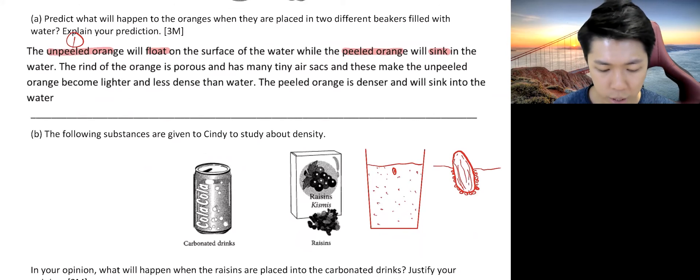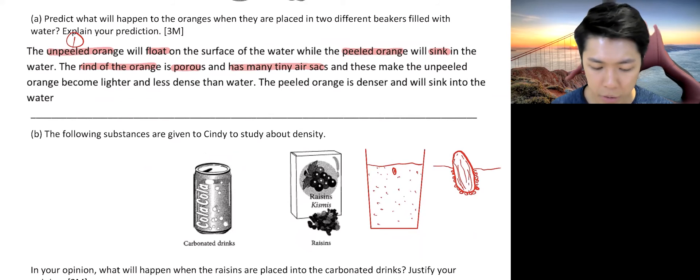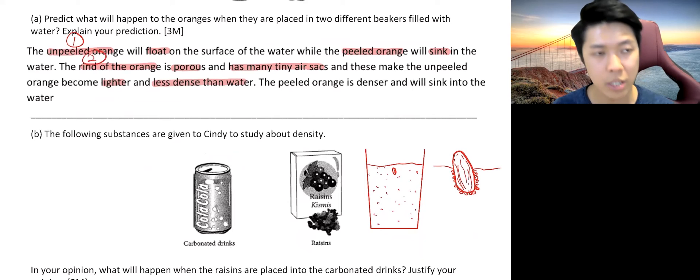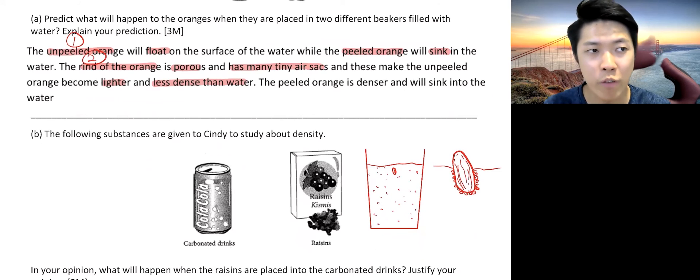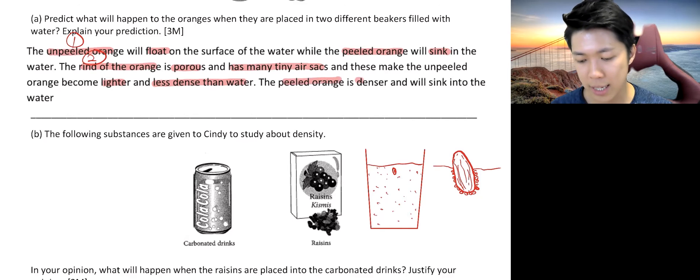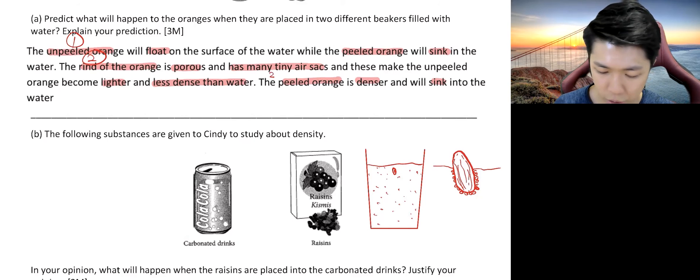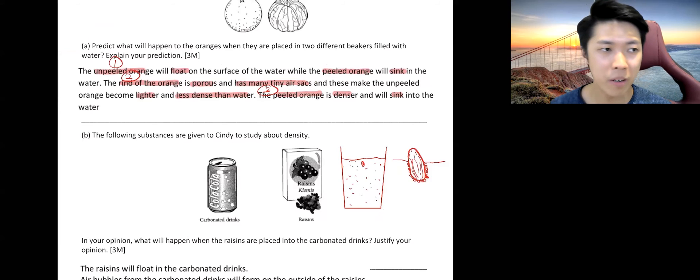Well, the unpeeled orange, the rind of the orange is porous and has many tiny air sacs, which makes this unpeeled orange become lighter, less dense than water. So there you go. That's your second mark. So the rind of the orange has a lot of empty space, there's a lot of air bubbles, which makes it less dense than water. And the third mark goes to peeled orange. It's denser and sinks into the water because there is no air pockets anymore. So there go your three marks.